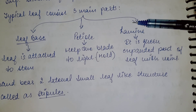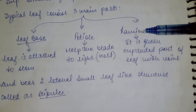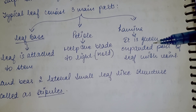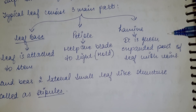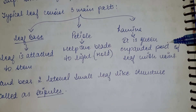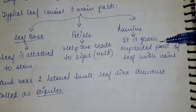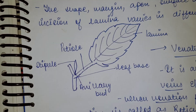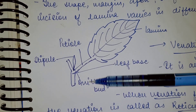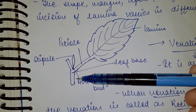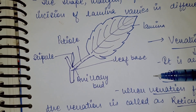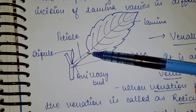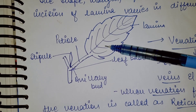The third main part is the lamina, which is the green expanded part of the leaf with the veins — the main area where you can see the veins. The petiole helps to hold the leaf straight.